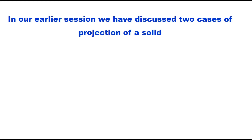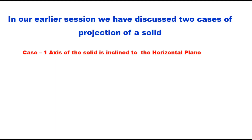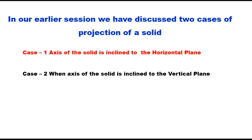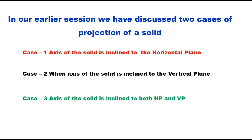Friends, in our earlier session on projection of solids, we have discussed two cases. Case one was when the axis of the solid is inclined to the horizontal plane, and case two was when the axis of the solid is inclined to the vertical plane. Now in this session, we shall discuss case three, when the axis of the solid is inclined to both HP and VP, and we take a square prism. The axis is a line joining the center of the top face and bottom face, and you can keep the solid first either in the horizontal plane or in the vertical plane, giving the angle theta or phi.